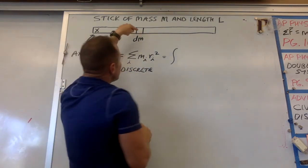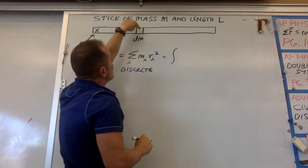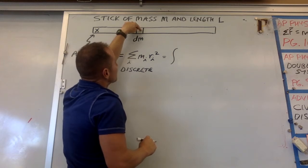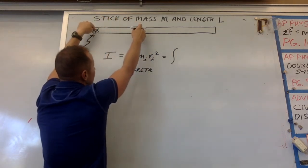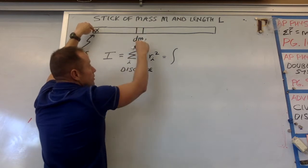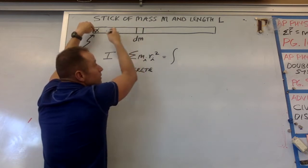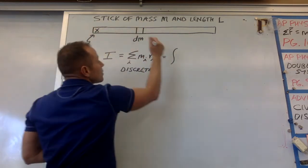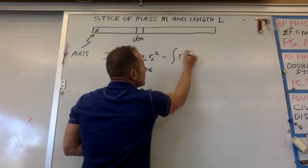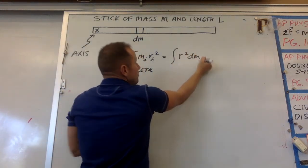So what you need to do is take this little mass and then multiply by its distance squared. And that would be the moment of inertia just from this little piece. And then you have to add them all up.